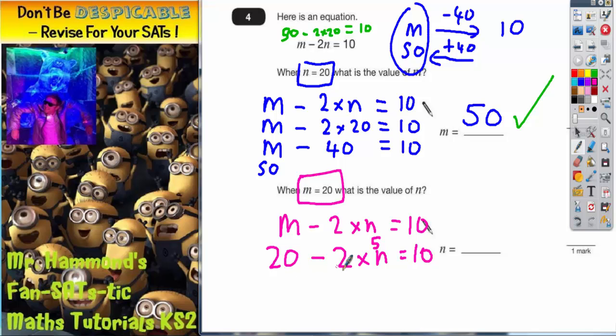So 20 take away 2 lots of 5 is 10. So n will have to be 5. It works.